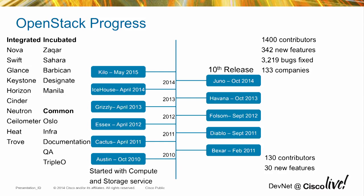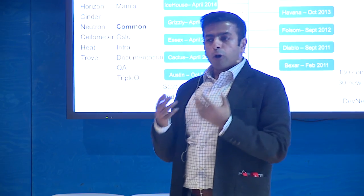OpenStack releases come out every six months. The first release in 2011 had just about 130 contributors with 30 new features across two services. Last November at the OpenStack Summit in Paris, we had more than 1,400 contributors across 133 companies. The community has exploded, and the number of services has expanded beyond infrastructure — for example, Sahara is an incubated project that lets you provision and run jobs on Hadoop clusters within an OpenStack environment.